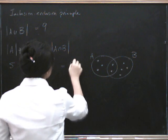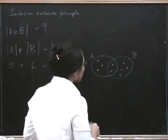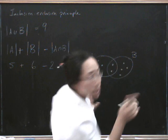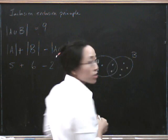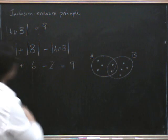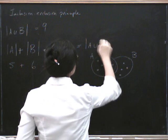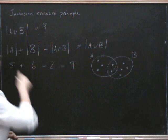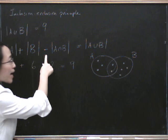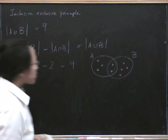That gives me nine, as it's supposed to. So this is a general principle: I count these ones, then I count these ones, and then I go — oops! — I counted the ones in the intersection twice, so I have to subtract one lot of them again. So the answer is that the number of elements in the union is the number of elements in A plus the number of elements in B, take away the number of elements in the intersection.